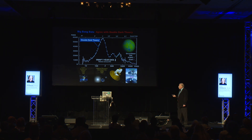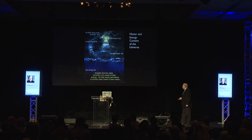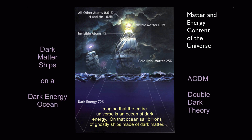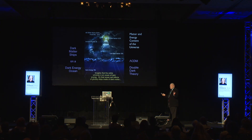So, how do we picture the whole universe? Imagine that the entire universe is an ocean of dark energy. On that ocean sail billions of ghostly ships made of dark matter. The visible matter is just half a percent — it's the beacons at the tops of the masts of the biggest ships, and that's all we see.